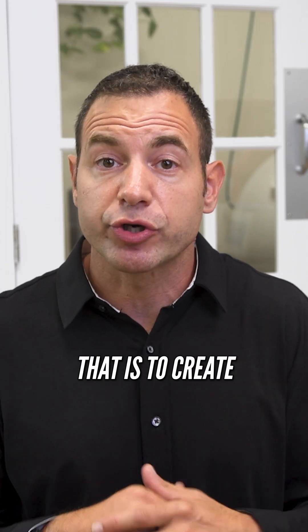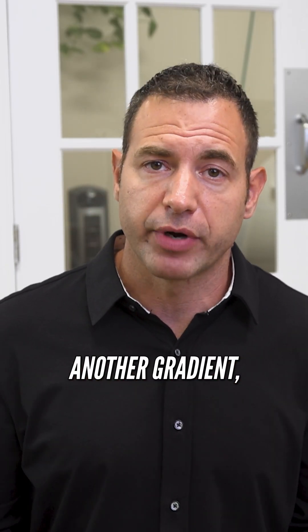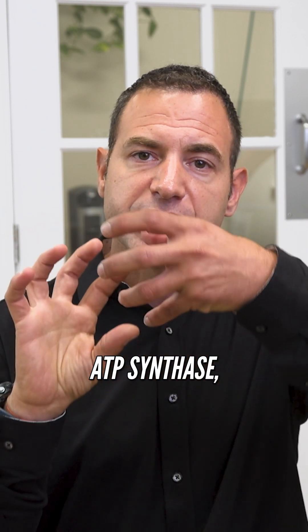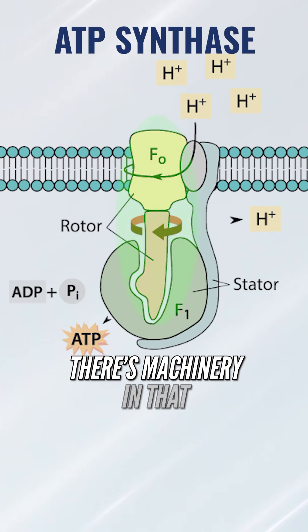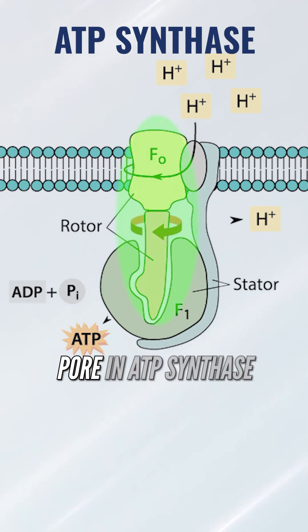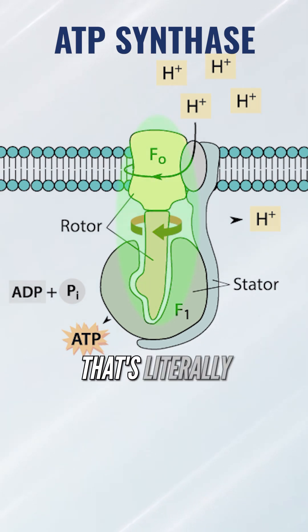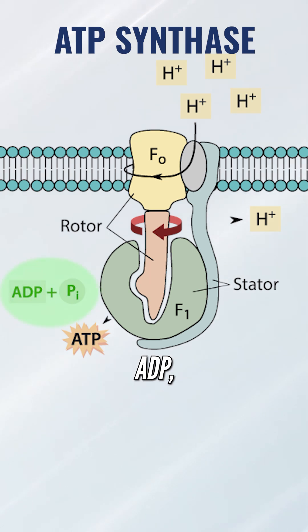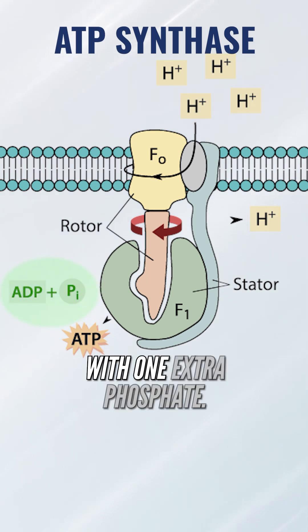And the reason we're doing that is to create another gradient — a hydrogen gradient. As we get that concentration gradient and it's moving down through ATP synthase, there's machinery in that pore, in ATP synthase, that's literally going to bind two molecules together: ADP with one extra phosphate.